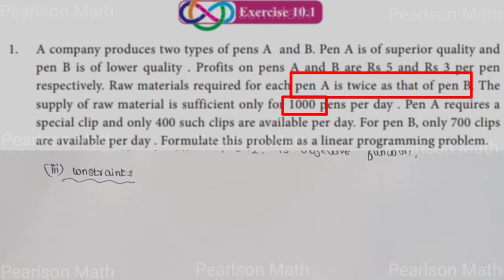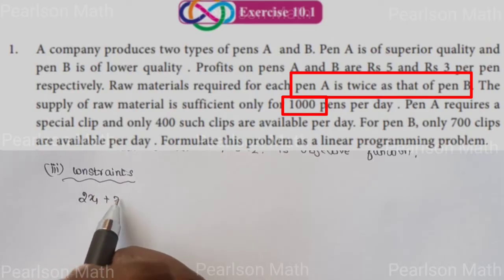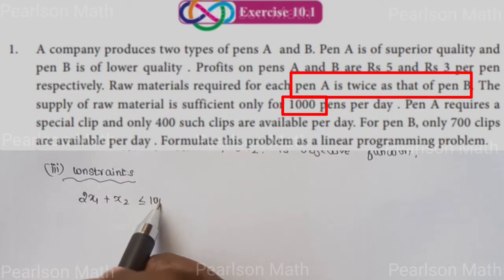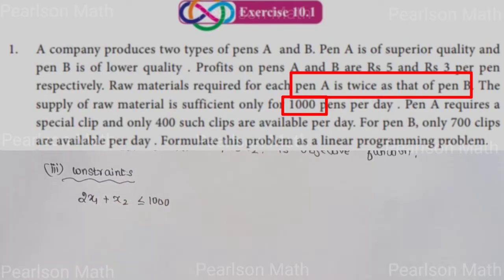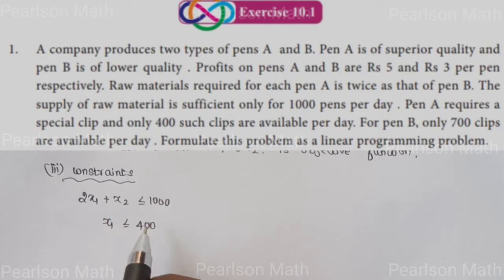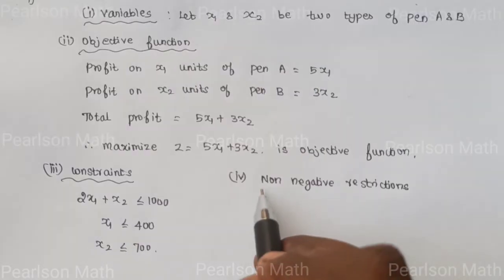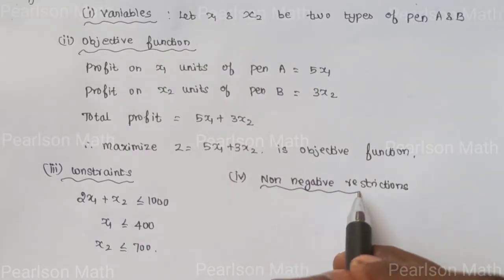Since pen A requires twice the raw material as pen B, and supply is sufficient for 1000 pens per day, the raw material constraint is: 2X1 plus X2 less than or equal to 1000. Pen A requires only 400 clips, so X1 less than or equal to 400. Pen B has only 700 clips available, so X2 less than or equal to 700.